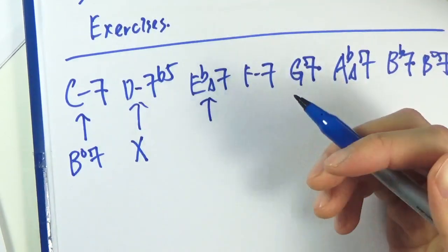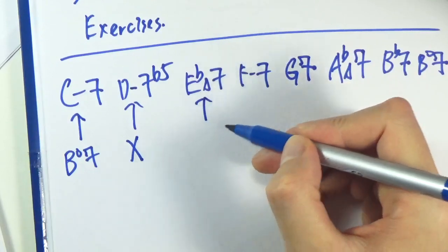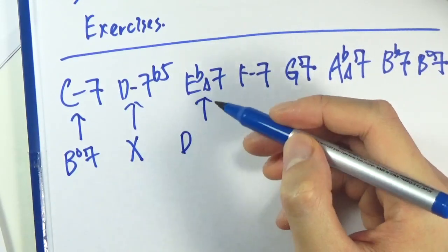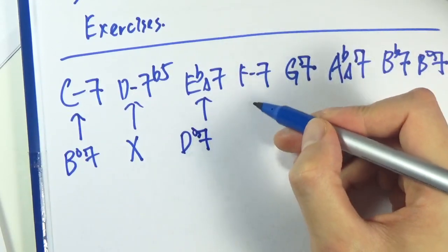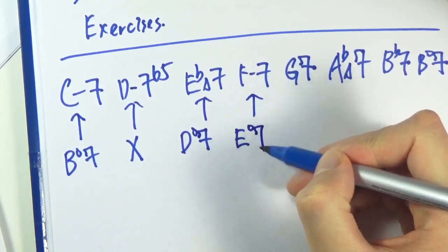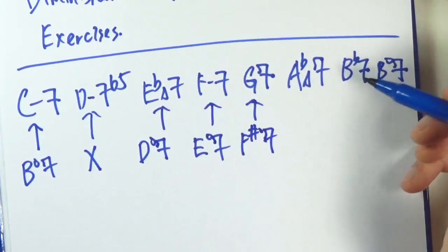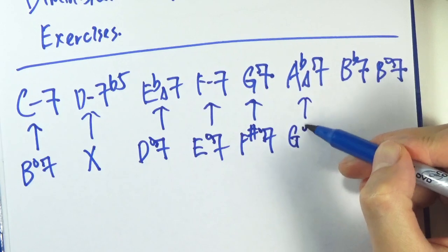Okay. And Eb, so that should be a D diminished 7. F, that should be an E diminished 7. G, that would be F sharp. Ab, that should be G diminished 7.